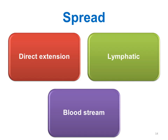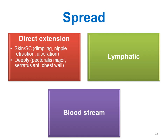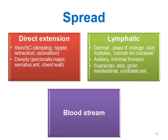Spread in breast cancer can occur by direct extension, lymphatics, or the bloodstream. By direct extension, it may involve the skin superficially — causing dimpling, retraction, or ulceration — or deeply, involving the pectoralis major or the chest wall. Regarding lymphatics: if there is peau d'orange, this is due to cutaneous lymphatic obstruction, where the skin is pitted at the orifices of hair follicles or sweat glands due to dermal involvement.